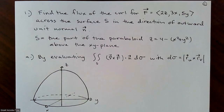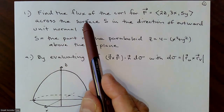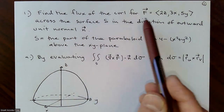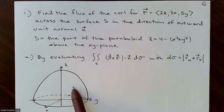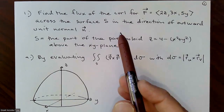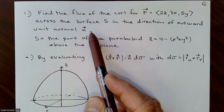This is part two on Stokes' Theorem. Hopefully you've watched the video before this. I want to do another example more thoroughly, take it slow, and remind you of the multiple ways you can answer a question like this. We're asked to find the flux of the curl for the vector field (2z, 3x, 5y) across the surface in the direction of outward unit normal n — a very common way to phrase a question in this section.